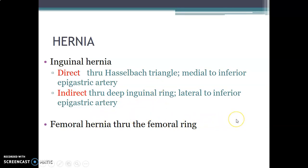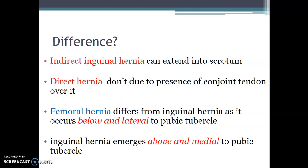Femoral hernias occur through the femoral ring. The indirect hernia, which passes through the deep ring, can extend into the scrotum. The direct hernia does not extend into the scrotum due to the presence of the conjoined tendon overlying it.